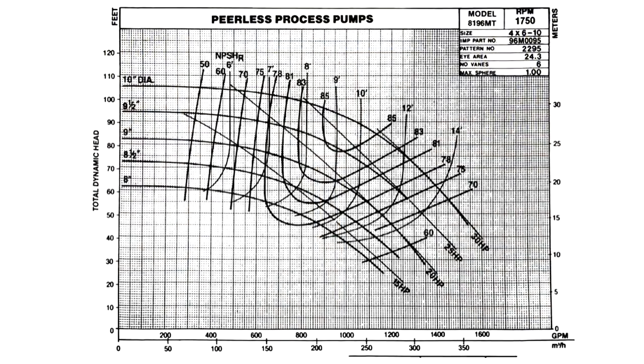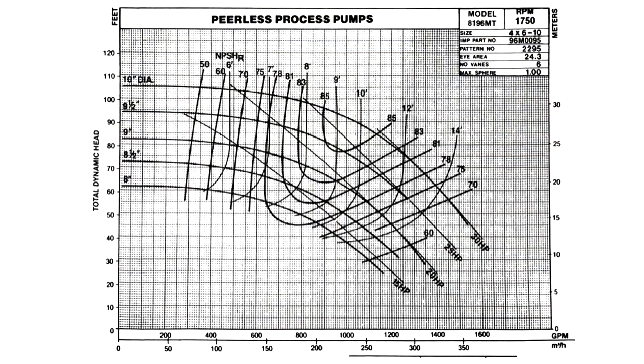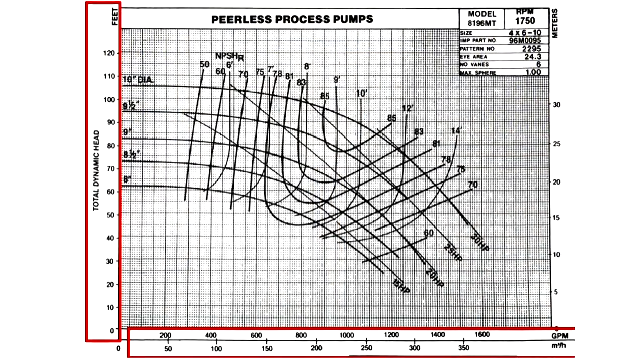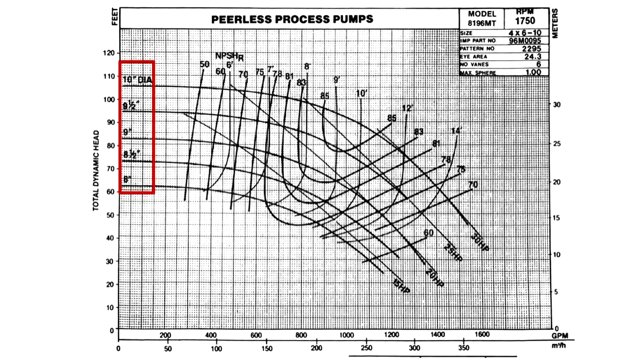Let's look at a price book curve first. The flow rates in GPM, or cubic meters per hour, are on the x-axis or the bottom. The pump head in feet or meters are on the y-axis or the vertical axis. The dark curves are specific impeller diameters.